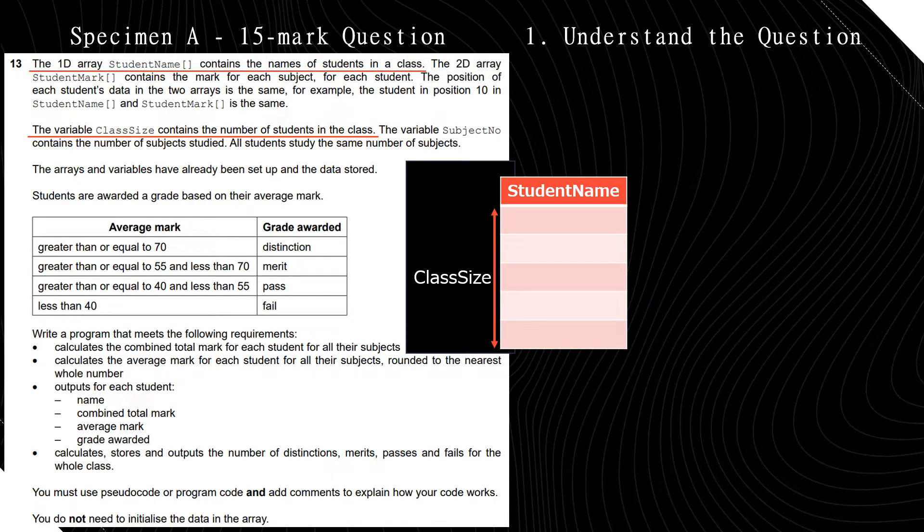So the first step is we're going to understand what the question is asking for, kind of picture the data structures that we need, if there are any constants, if there are any variables, and put some test data and think about what the possible results would be, so then we can go ahead and write the algorithm.